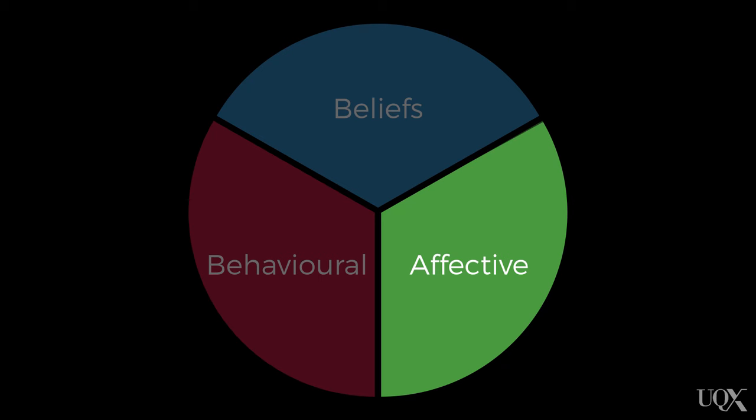The second component of prejudice is the affective component. This includes the usually negative feelings about another group, whether it's dislike, resentment or disgust.